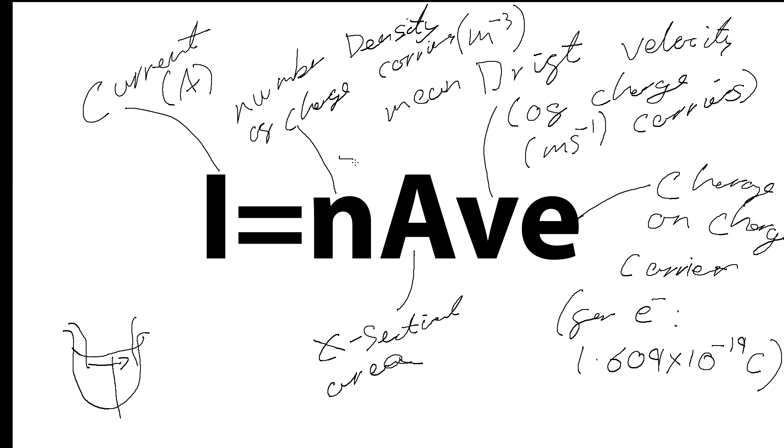So if we have some saline solution, a sodium chloride solution, it would be telling us, in some given volume, how many of these ions do we have? So this is the equation that links drift velocity and the number density of the charge carriers with current and the size of the wire we're looking at, and so on and so forth.